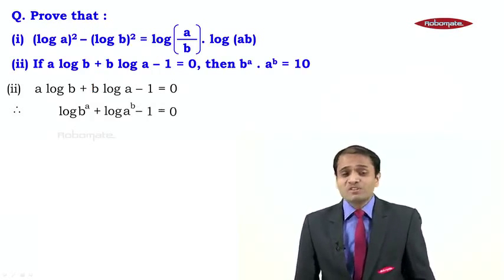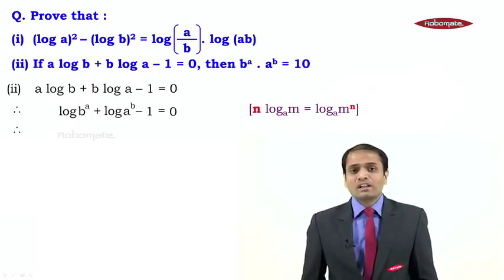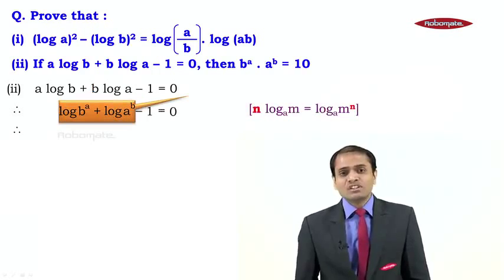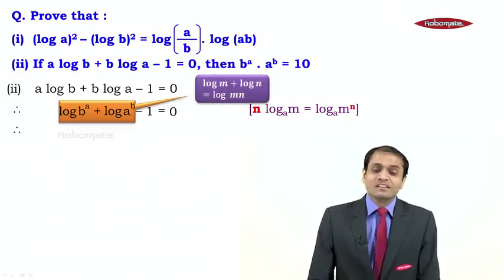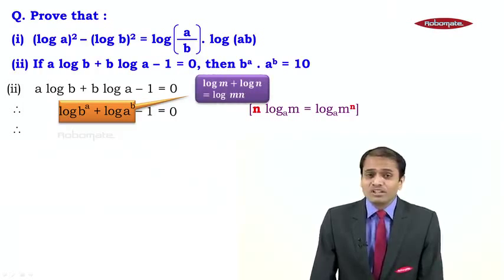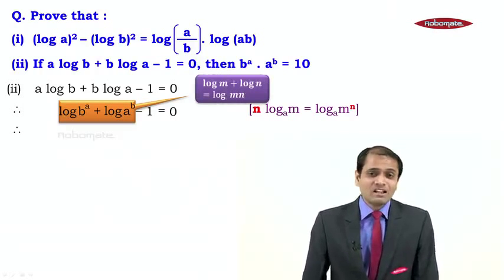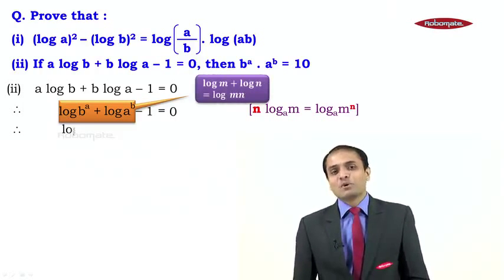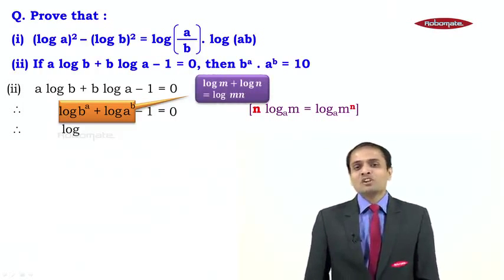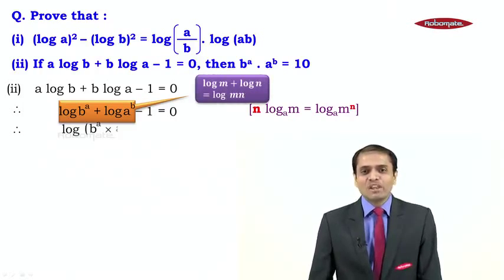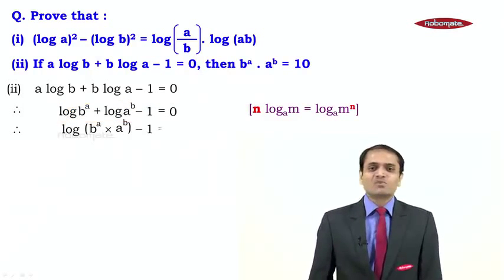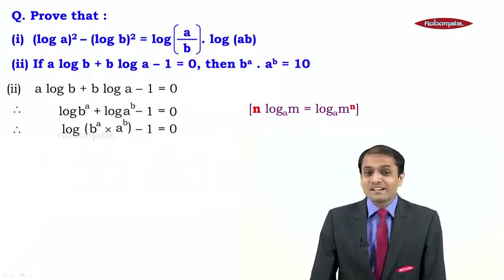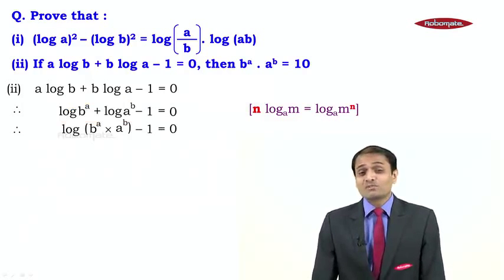Our aim is to get a single log. The two log terms on the LHS have a plus sign between them, so we apply the product law. This gives log(b^a · a^b) − 1 = 0. We now have a single log on the LHS, but we still have the −1 to deal with.